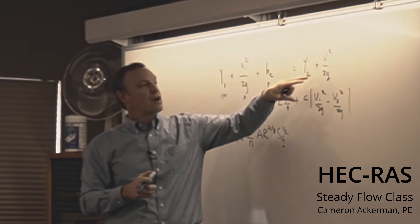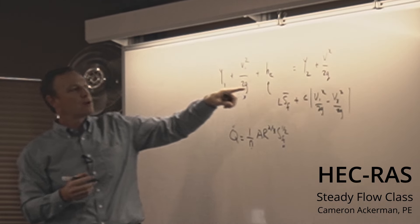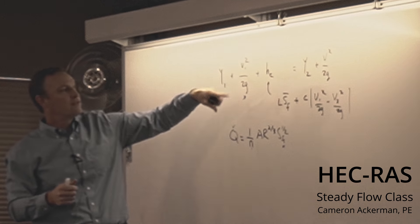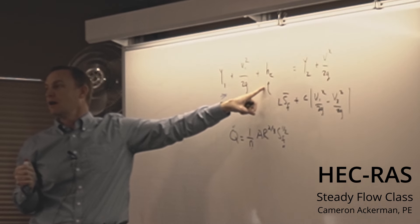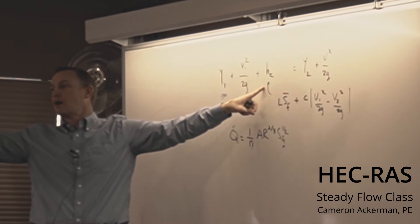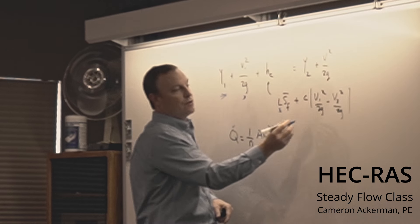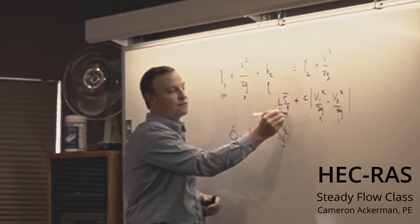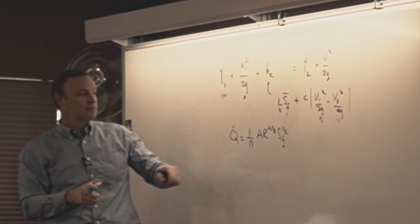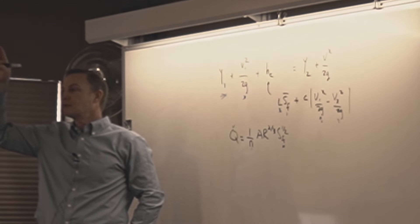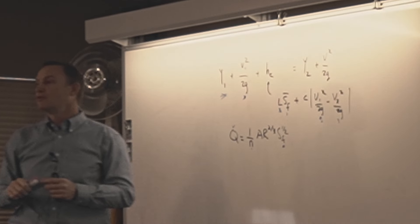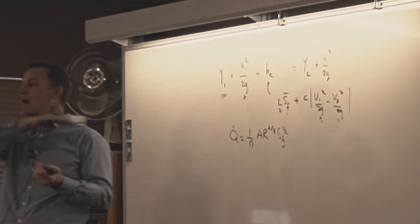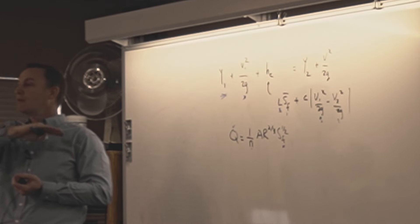Solving for cross section two, we approximate the depth and apply it upstream. We know the distance, we know v1, we approximate the velocity head at two, and the only unknown is really the friction slope — which we know at the bottom and can estimate at the top to get an average. That's how we solve each individual term to advance the backwater computation from section to section.